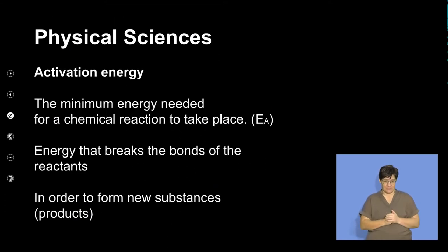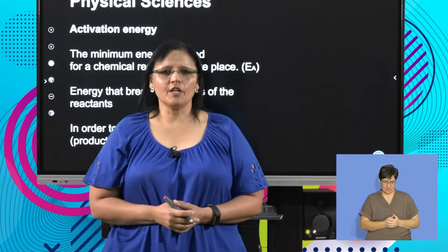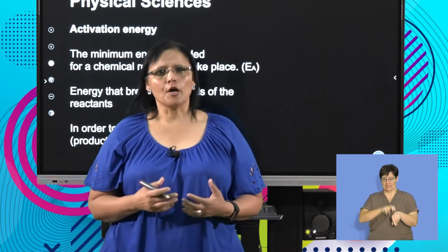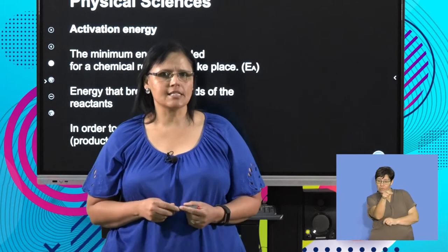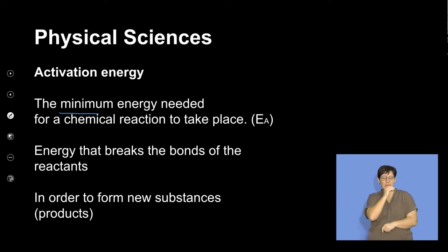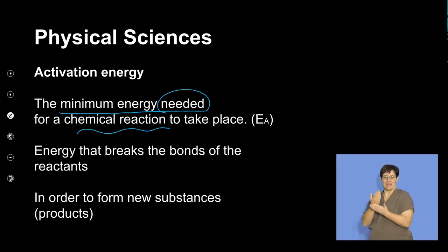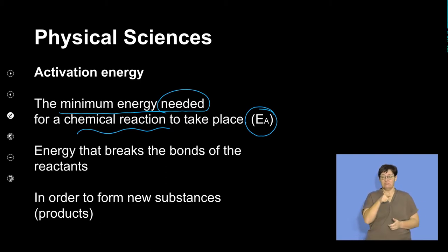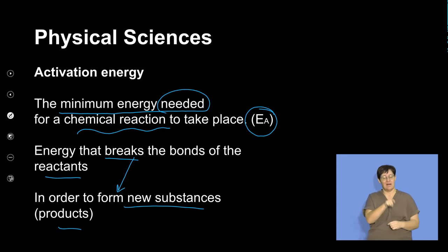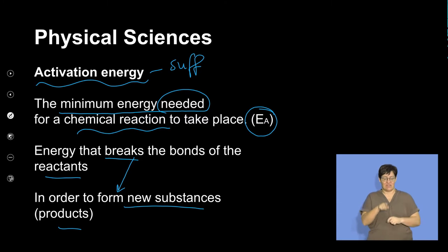For every reaction, there is a specific activation energy at a specific temperature. The definition for activation energy is one of the terms we need to understand for rates of reaction. Your activation energy is the minimum energy needed for a reaction to take place. We use the symbol Ea. It is the energy that breaks the bonds of the reactants so they can form new substances — the products. The bonds must first be broken for the reaction to proceed.